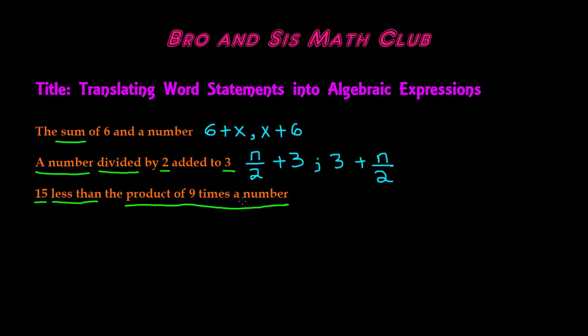So 9r, and we have to subtract 15 from this because it's saying 15 is less than the product of 9r. So we write 9r - 15. This is our algebraic expression.